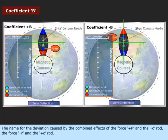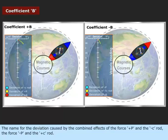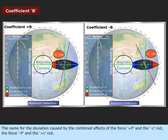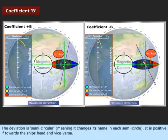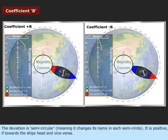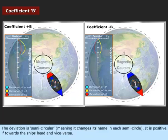The deviation caused by the combined effects of force positive P and the negative C rod, the force negative P, and the positive C rod is semicircular, meaning it changes its name in each semicircle. It is positive if towards the ship's head, and vice versa.